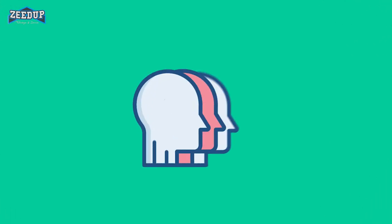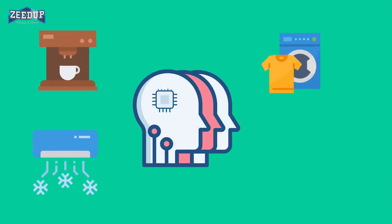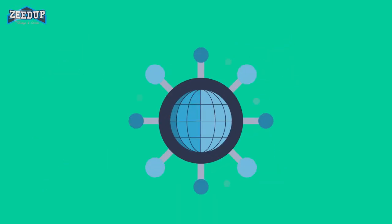By using IoT, all devices — e.g., coffee maker, AC, washing machine, ceiling fan, lights — almost anything you think of, having sensors, can be connected with the Internet.